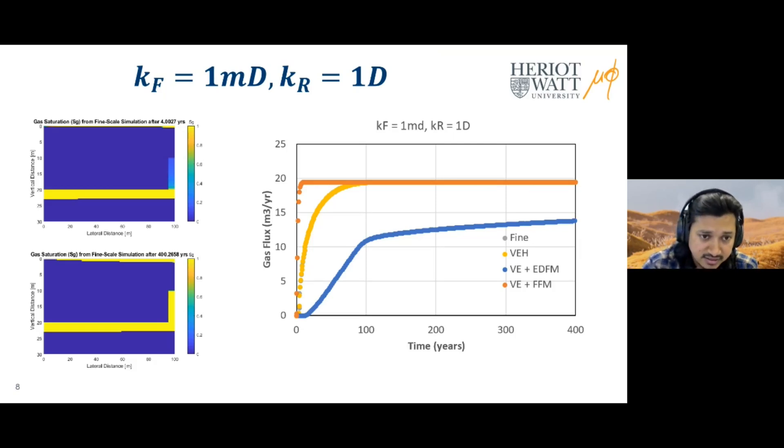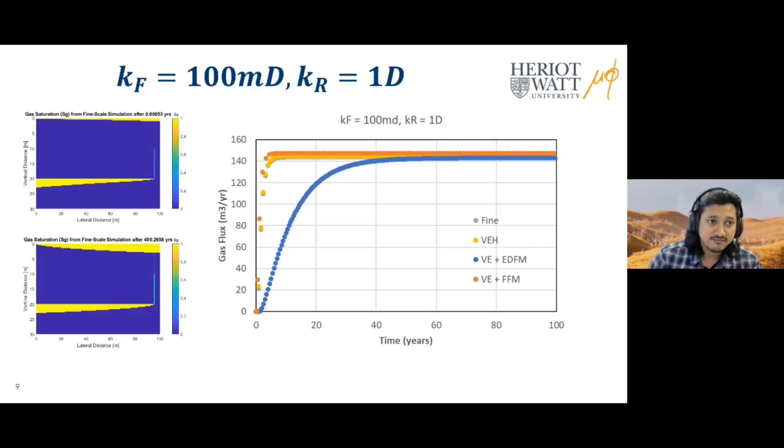The VE-EDFM model is not able to match it right now because it hasn't reached steady state yet. Here's another simulation where we've taken the fault permeability to be 100 millidarcy. I've shown the gas saturation evolution for the scenario at late and early times. In this scenario the EDFM is still able to match the fine scale simulation at late times, but the full fault model is able to actually capture the final steady state flux prediction quite well. This is a very useful conclusion because now we can integrate this in a large scale CO2 lab style model and calculate what the leakage fluxes will be.